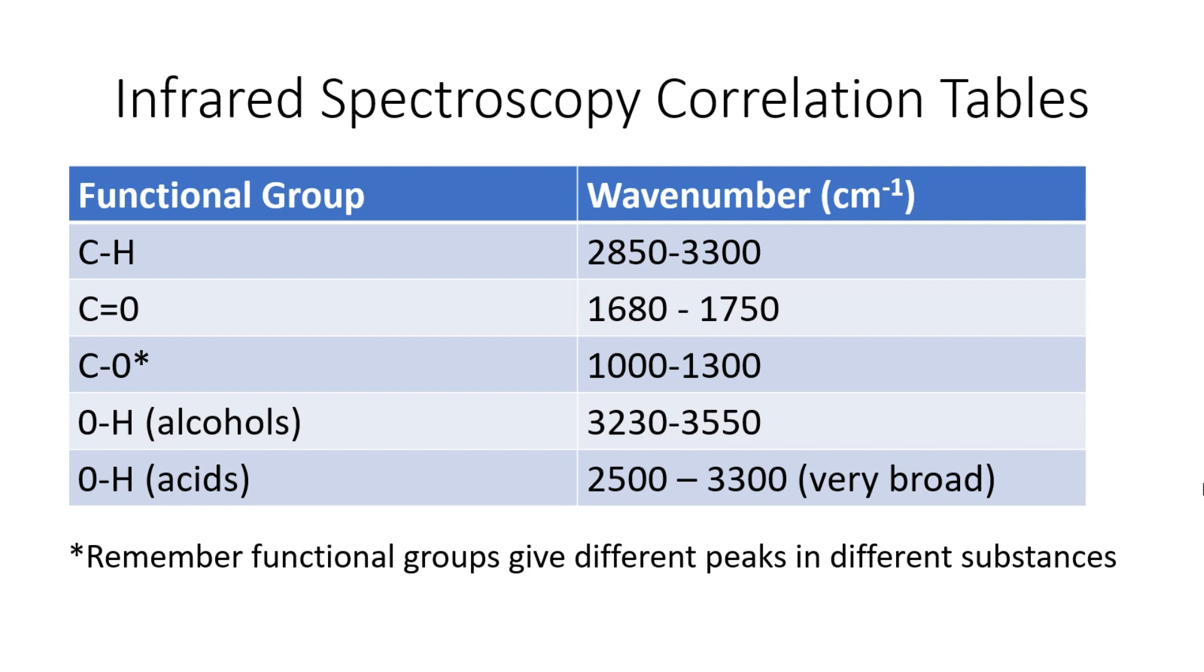We can spot some other really key bits of information. If we look at the O-H bond, you've actually got two different things going on. In an alcohol, the peak tends to be much narrower occurring in this region here, whereas in an acid, it's very much larger, and you would see a very broad peak. It is worth always remembering that functional groups give different peaks in different substances. So if you're looking at an alcohol or looking at an acid and you see an O-H group, they're going to look different in the spectrum, and you have to be aware of that.